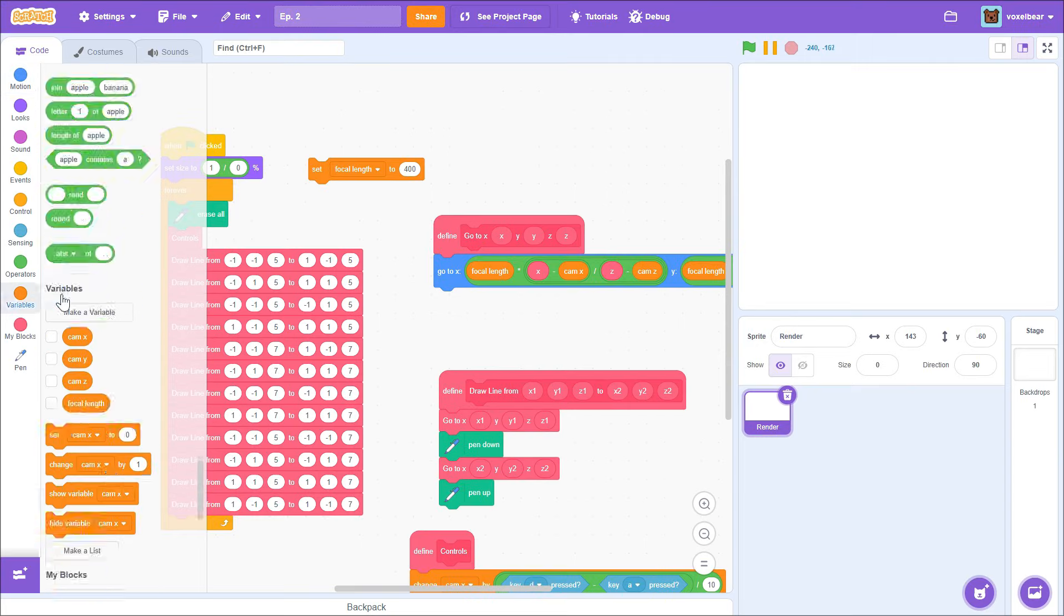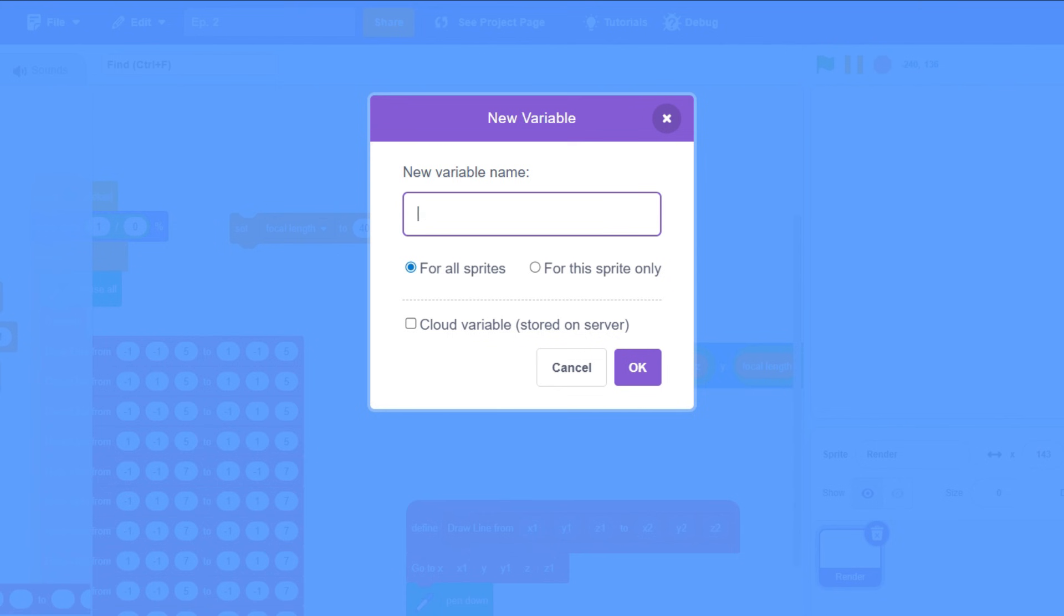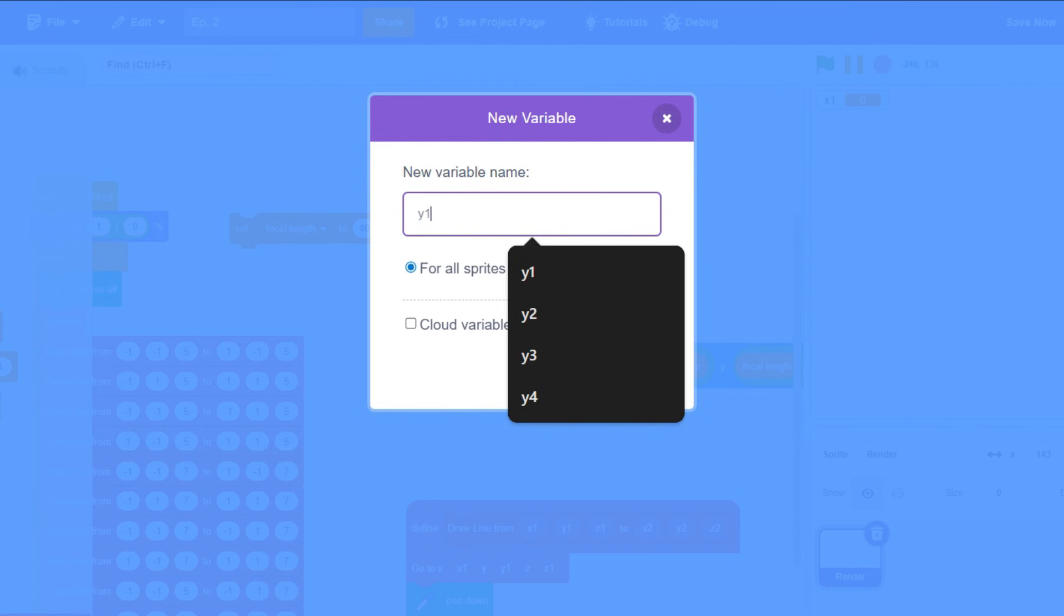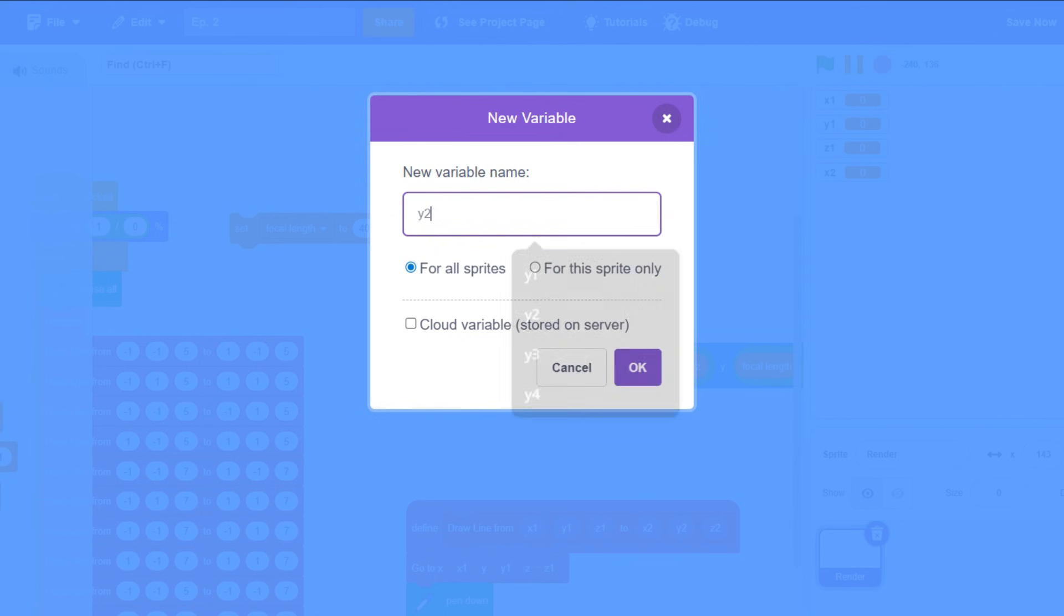Now to implement this, we'd want to make some adjustments to our current code. Create 6 new variables: x1, y1, z1, x2, y2, z2,